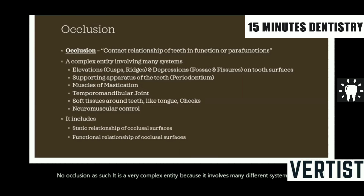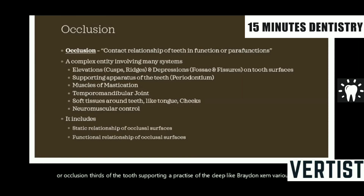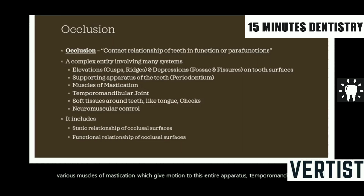For example, the elevations and depressions which are present on the occlusal and incisal surfaces, the supporting apparatus of the teeth like the periodontium, various muscles of mastication which give motion to this entire apparatus, the temporomandibular joint, soft tissues around the teeth like the tongue and cheeks which help in keeping the food to be masticated among the occlusal teeth, and lastly the neuromuscular control which controls the entire system.